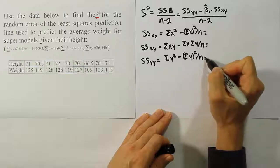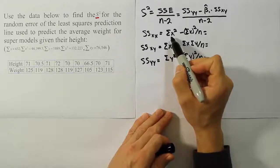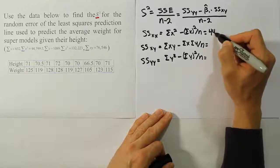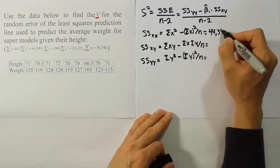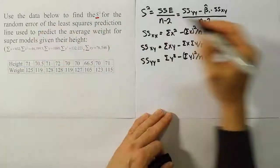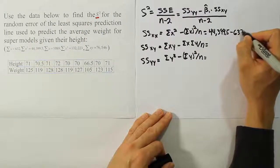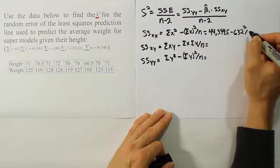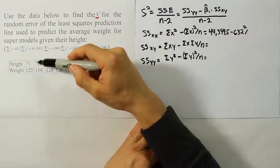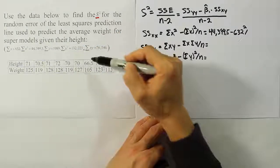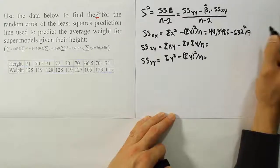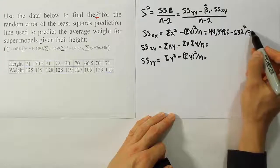Let's fill in these values for each formula. So the summation of X squared is given to us as 44,399.5 minus the sum of X quantity squared, that's 632 squared over n. Now n is the original number of ordered pairs we had, that's 1, 2, 3, 4, 5, 6, 7, 8, 9. So n here is 9.